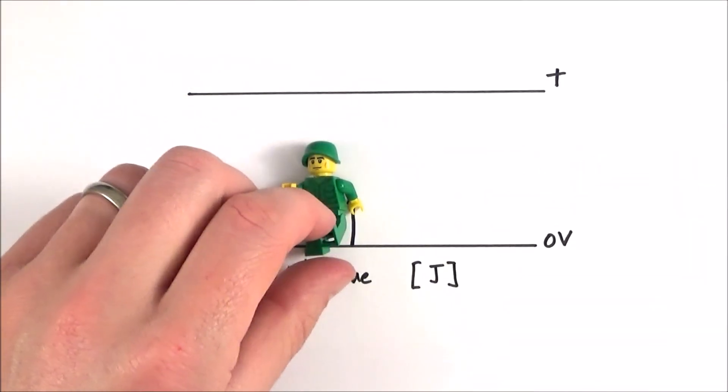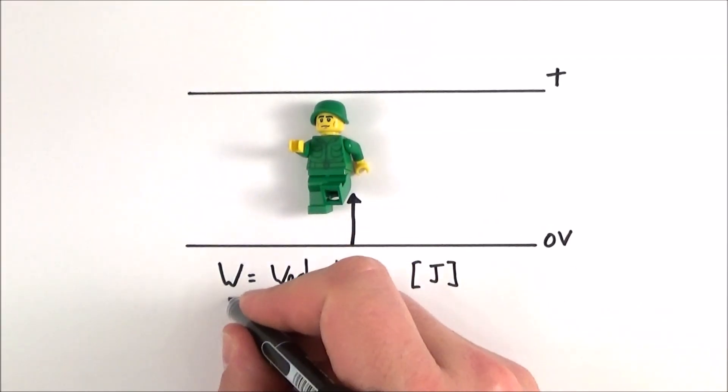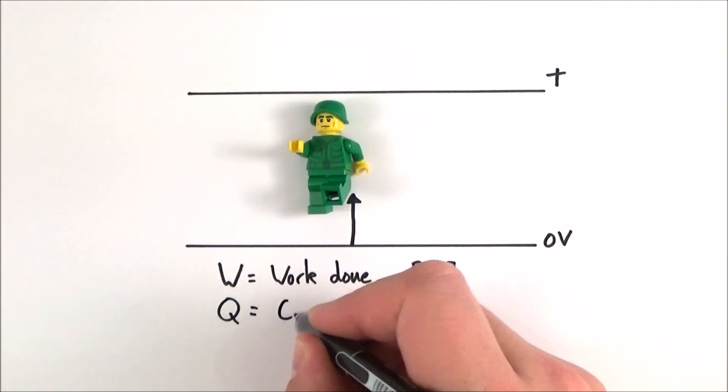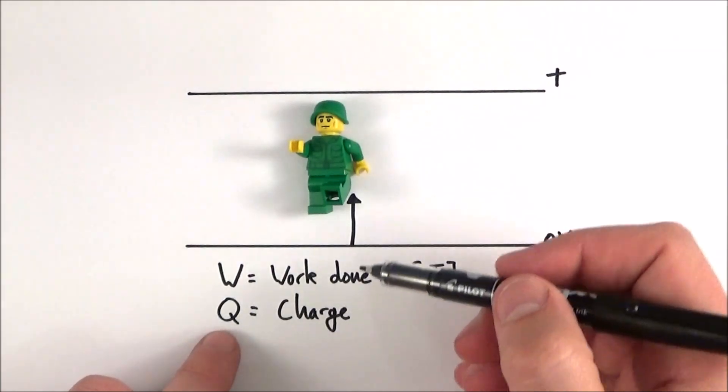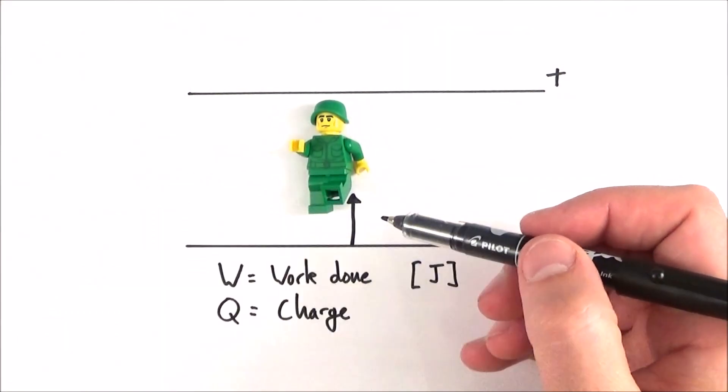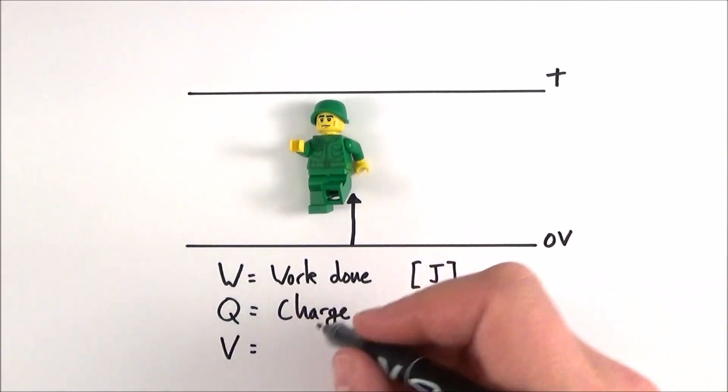So I do a certain amount of work W moving this positive charge which has some kind of charge Q. Remember Q being the fact that it's quantized and it's made up of this elementary charge or little e and some multiple of that and if I move it up through a certain distance it will increase its electrical potential and V is going to be equal to the potential difference.